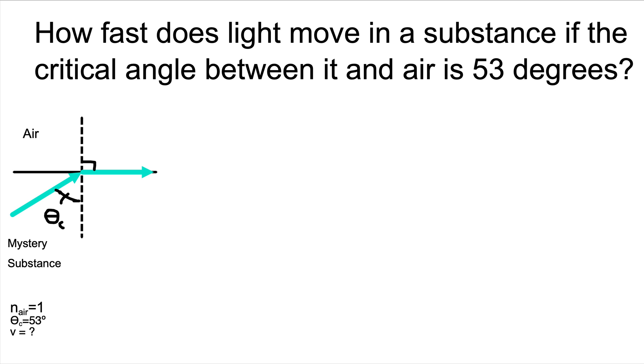We can then write down what we are trying to find, which is the velocity of light in the mystery substance. Since we don't have an equation with the variables that we have written down, we know that this will be a two-step problem. We will first have to find the index of refraction for the mystery substance, and then use that answer to find the velocity.